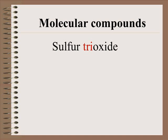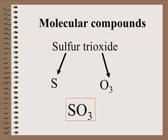If you are going to write the formula from the name, it's quite simple. Sulfur means one. Trioxide means three oxygens. The formula becomes SO3, sulfur trioxide.